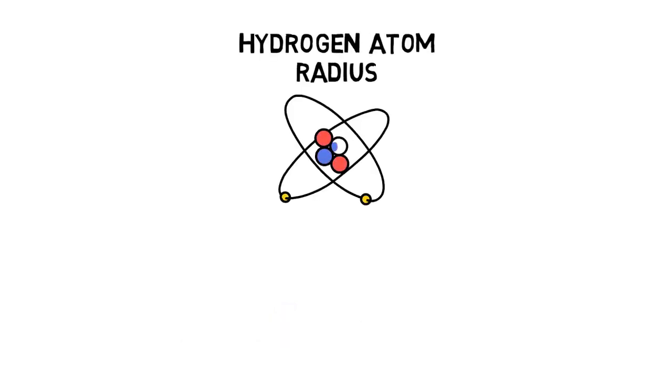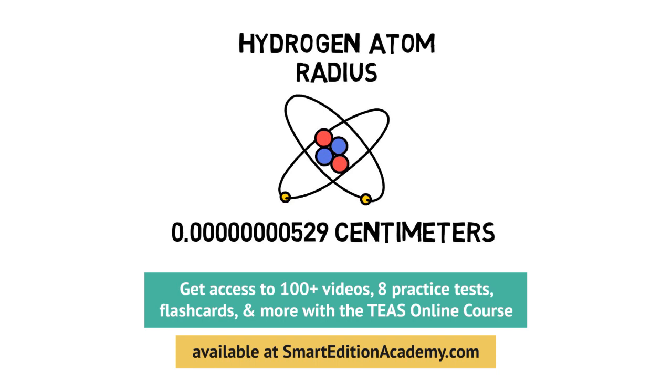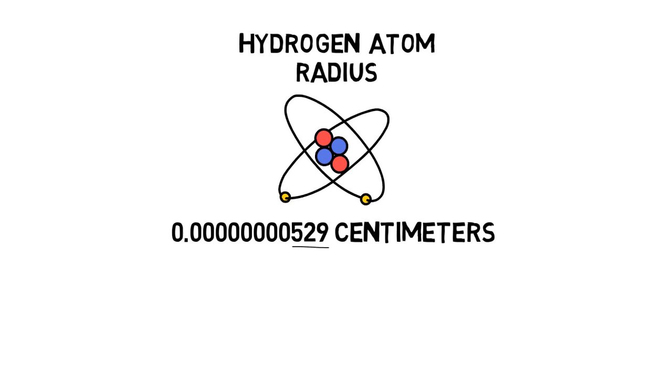Conversions from standard to scientific notation can also be accomplished for really small numbers like the radius of a hydrogen atom. Again, determine the coefficient, a value of at least one but smaller than 10. In this case 5.29. But 5.29 is not the same as 0.0000000529 centimeters. This time instead of multiplying we would divide by one billion. To express this as a power of 10 we would write 10 to the negative ninth, which is equal to one one billionth.